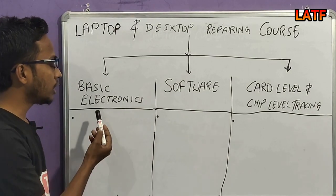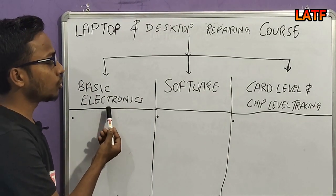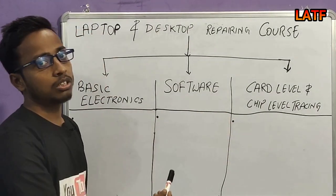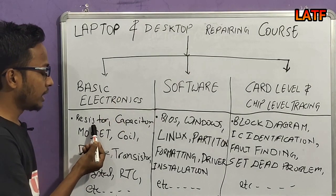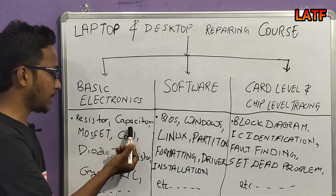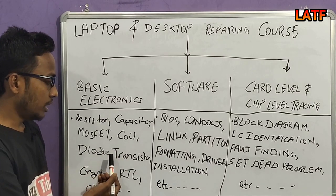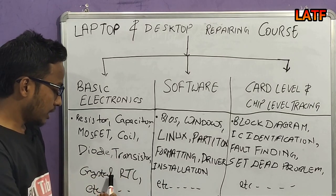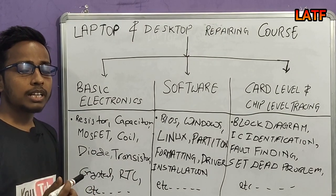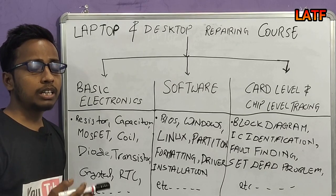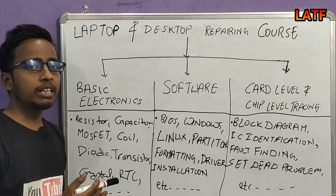In the Basic Electronics part, we will learn Resistor, Capacitor, MOSFET, Coil, Diode, Transistor, Crystal, RTC, and many more topics like Speaker, Ringer, Vibrator, Fuse, Battery, etc.